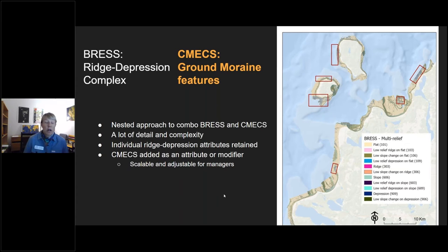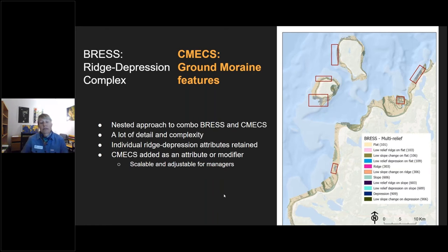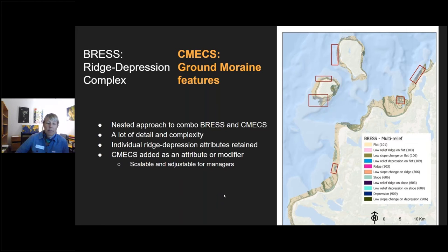The first complex we look at is a ridge-depression complex in BRESS, which in CMEX we can identify as a ground moraine feature. This approach gives us a nested approach combining BRESS and CMEX, with the BRESS output having additional attribute columns that add CMEX classification. By identifying complexes, we lump details together so managers can adjust map outputs for whatever their management objectives require.